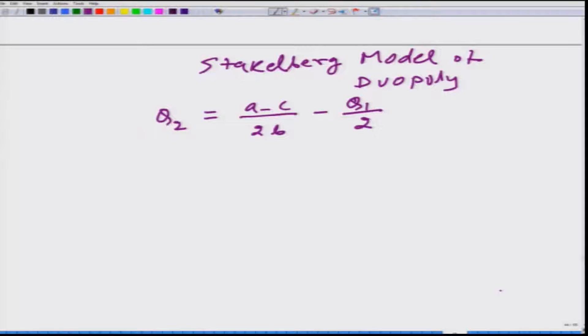When firm one makes its production decision, it does not exactly know what firm two is going to produce, but firm one knows that firm two is a profit maximizer and firm two is going to observe how much it has produced Q1, and firm two is going to take it into account and would produce according to this formula. This firm one is aware of.